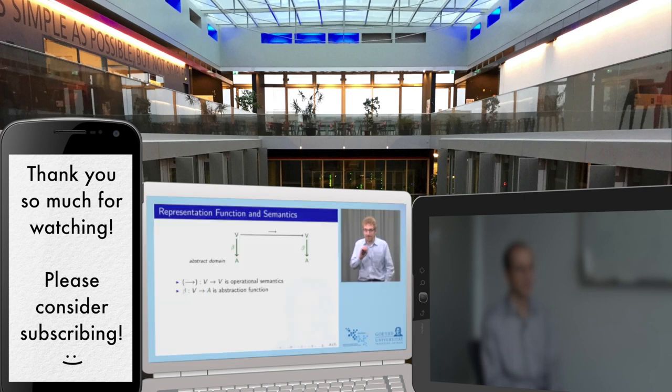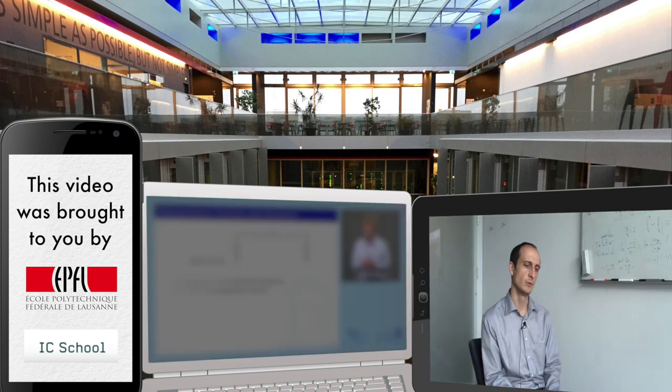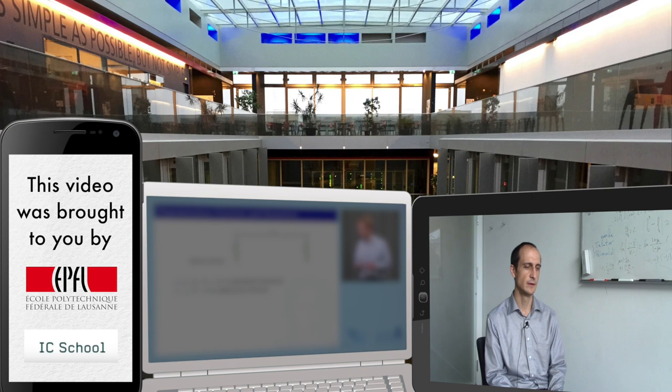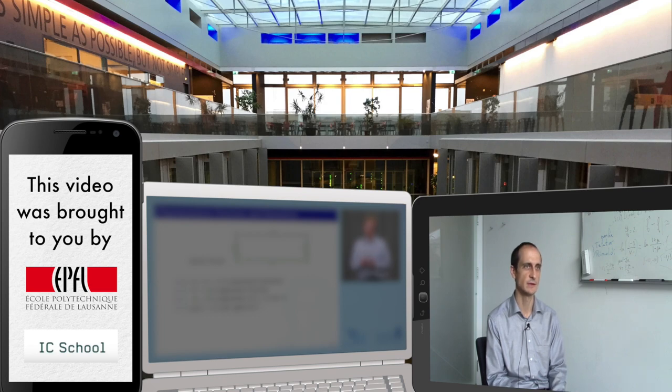So our abstraction function takes any kinds of contents that the operational semantics operates over and abstracts those into whatever domain we want to do our analysis over. When you try to establish more complicated properties, typically you want to take into account the program and the property that you want to establish at the same time and then sort of go both from the program and from the property. This is often called property-directed approach to verification or analysis.